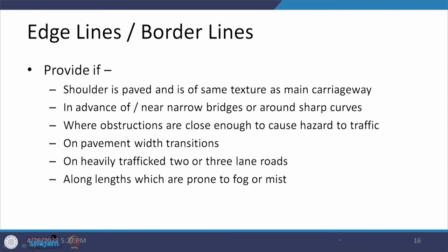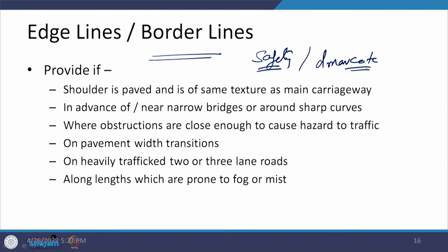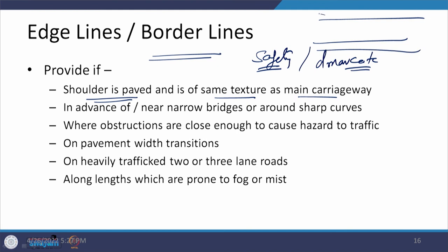Edge line or border line markings are important for ensuring safety and demarcating objects. If a paved shoulder has the same texture as the main carriageway, it needs to be defined by edge markings — a line separating the shoulder from the carriageway. These markings are required in advance of or near narrow bridges, sharp curves, or where obstructions are close and hazardous situations may arise, and wherever width transitions occur.